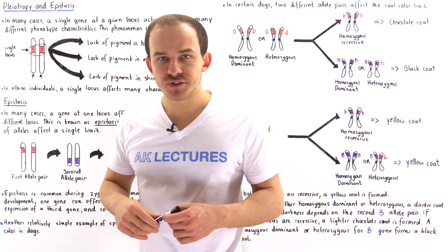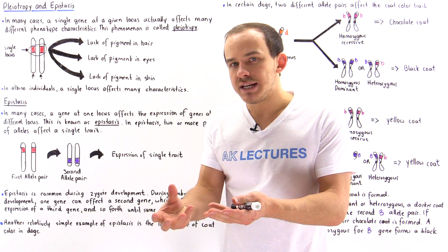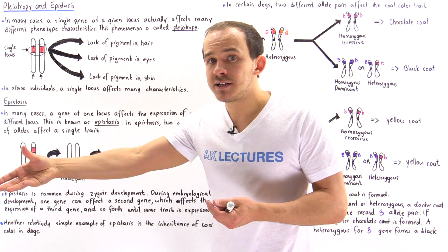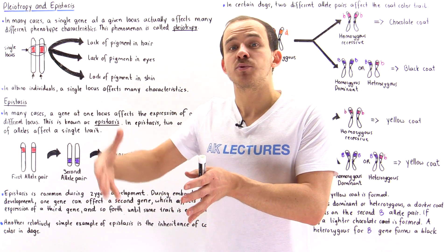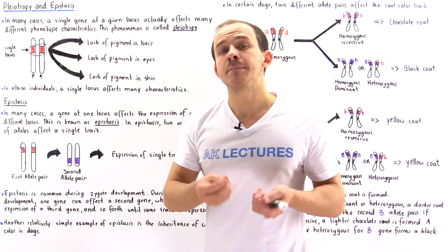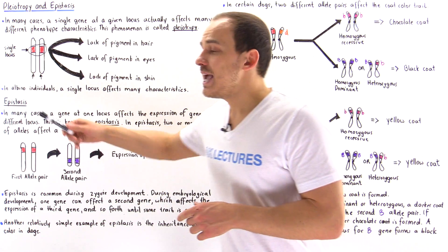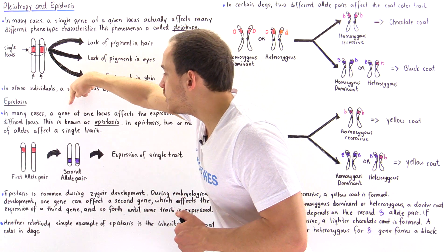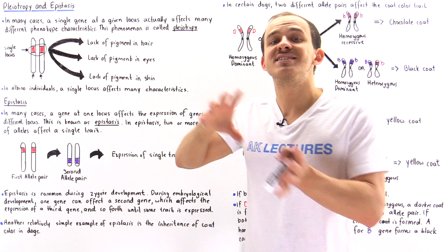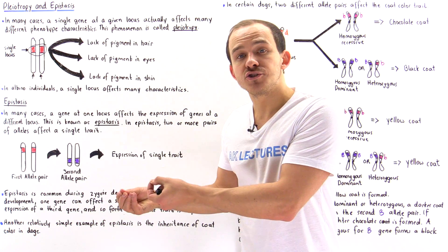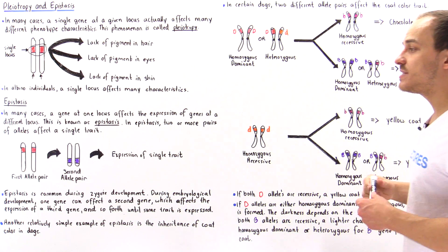What about epistasis? In many cases, a gene creates a protein that goes on to a second gene, and that protein affects the expression of that second gene. This process can continue until some type of trait is actually expressed, and this is what we call epistasis. So a gene at one locus produces a protein that goes on to a second locus and affects the expression of the gene at that second locus — this is known as epistasis.